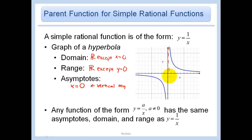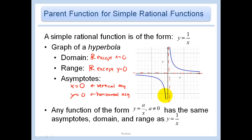The vertical asymptote is at x equals 0, and the horizontal asymptote is at y equals 0. For any function of the form y equals a over x, where a does not equal 0, the asymptotes, domain, and range are the same as y equals 1 over x. The value of a is just a stretch — it does not affect the domain, range, or asymptotes. The only things that affect those are shifts, which we'll see in the next slides.